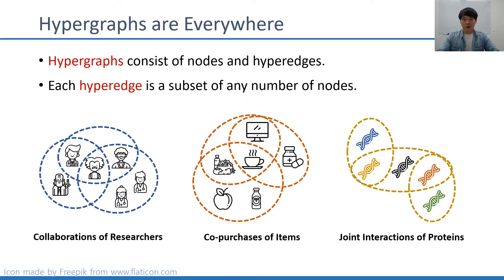Hypergraphs are everywhere. Hypergraphs consist of nodes and hyperedges, where each hyperedge is a subset of any number of nodes. Since hypergraphs can represent group-wise interactions among objects, they can be found in many areas in our life: collaborations of researchers, co-purchases of items, and joint interactions of proteins.